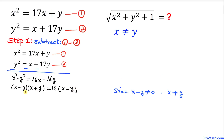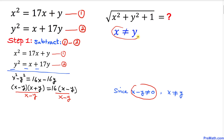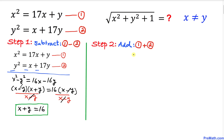Now divide both sides by (x − y). Since x is not equal to y, (x − y) is not equal to zero, so this is valid. The (x − y) terms cancel, and we simply get x + y = 16.